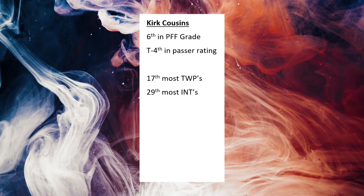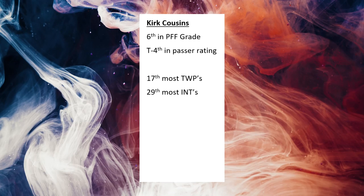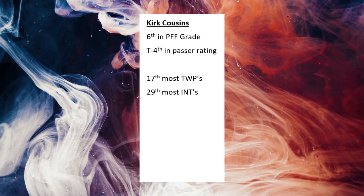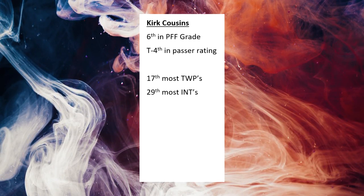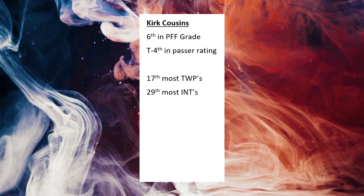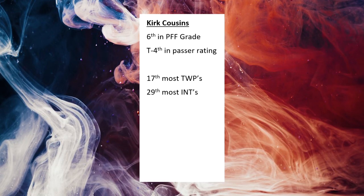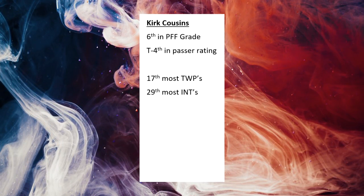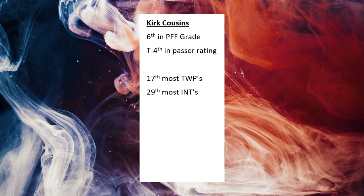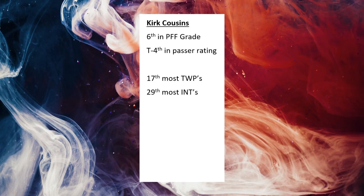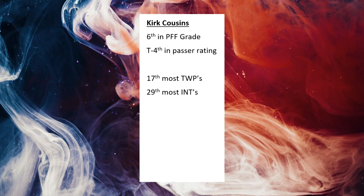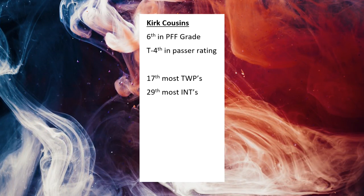But now let's go to step two. Kirk Cousins had the 17th most turnover worthy plays last season, but the 29th most interceptions. With this, it's probably fair to say he did get a little bit lucky. Maybe the tied for fourth in passer rating should have gone down a little bit. I think Pro Football Focus takes that into account, so I don't think it would affect their grade too much, but the passer rating possibly could have gone down a little bit. It's not massive — it's not one of those where he was second in turnover worthy plays but 29th in interceptions — but still, that's a reasonable thing to pay attention to.